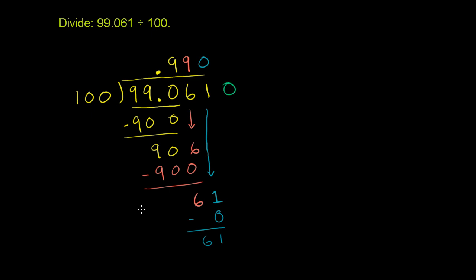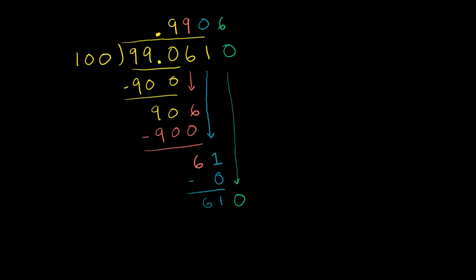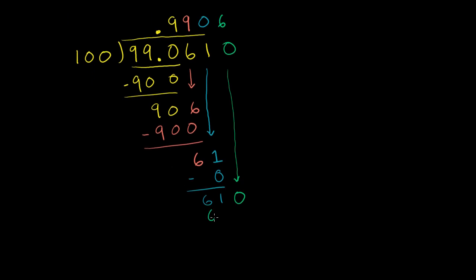So let's throw a 0 right now. Bring it down. Let's throw that 0, bring it down. 100 goes into 610 six times. 6 times 100 is 600. And then we subtract. 610 minus 600 is 10.